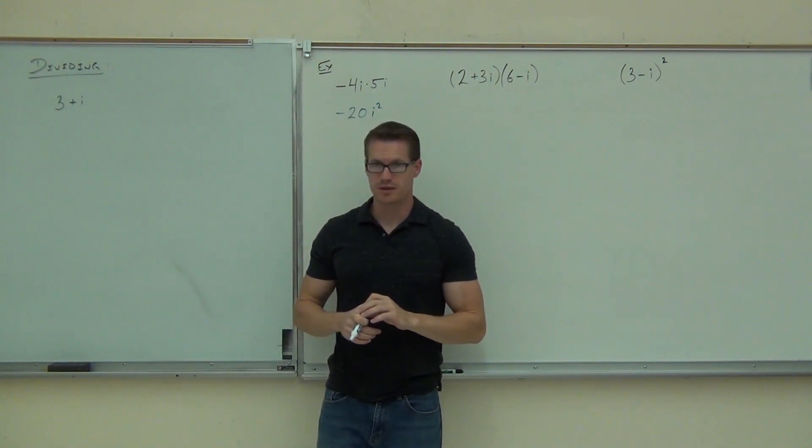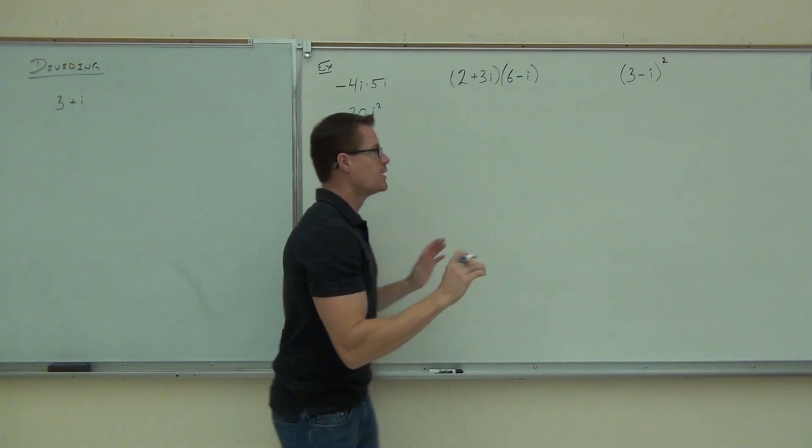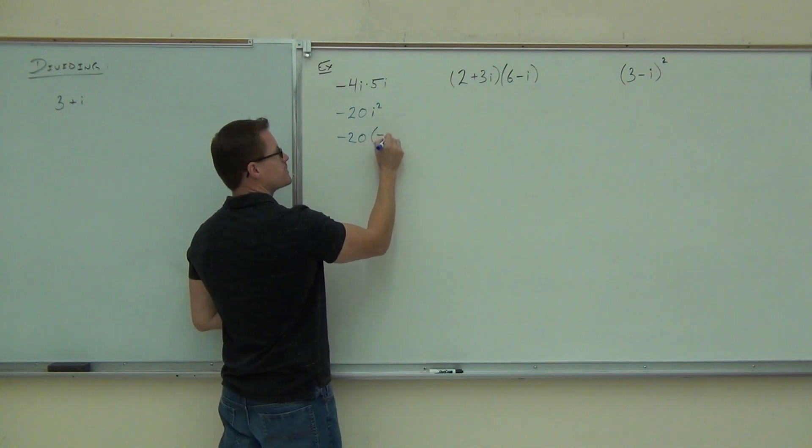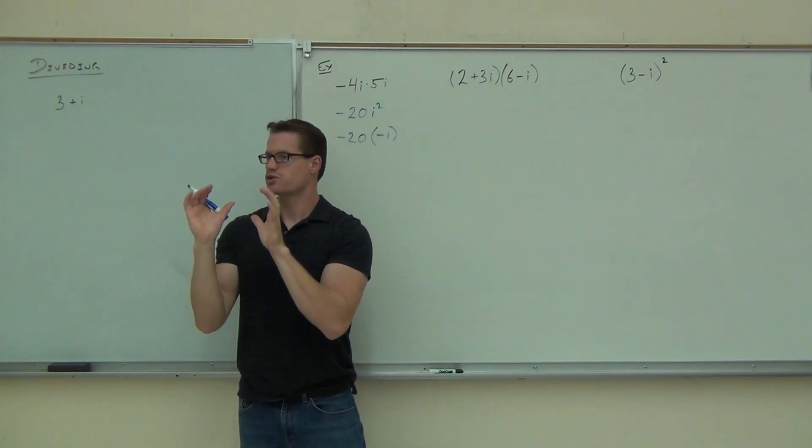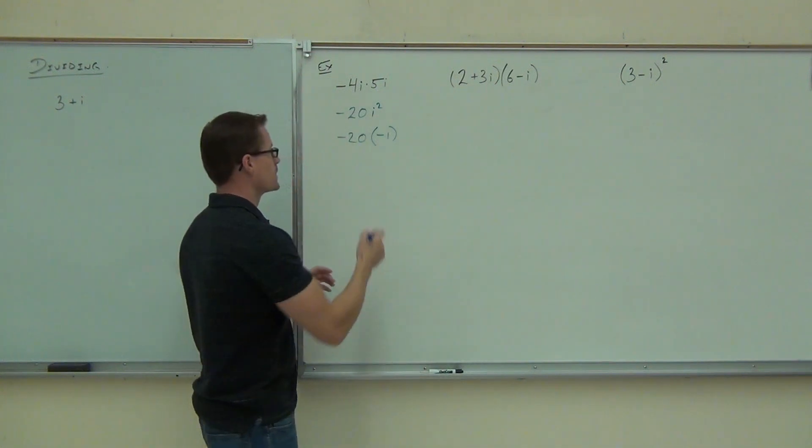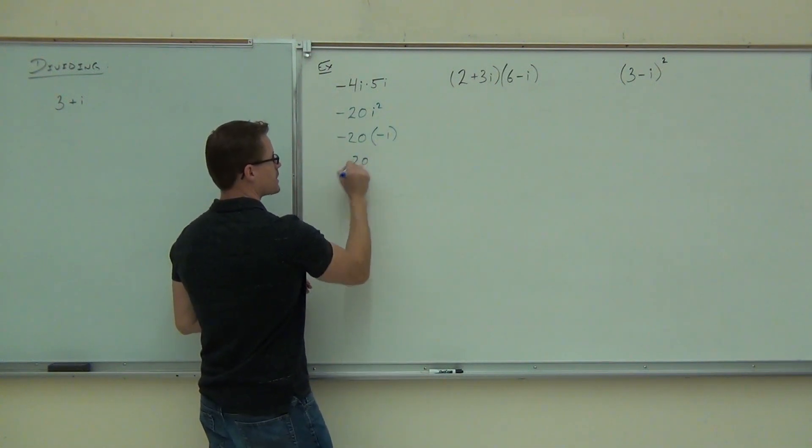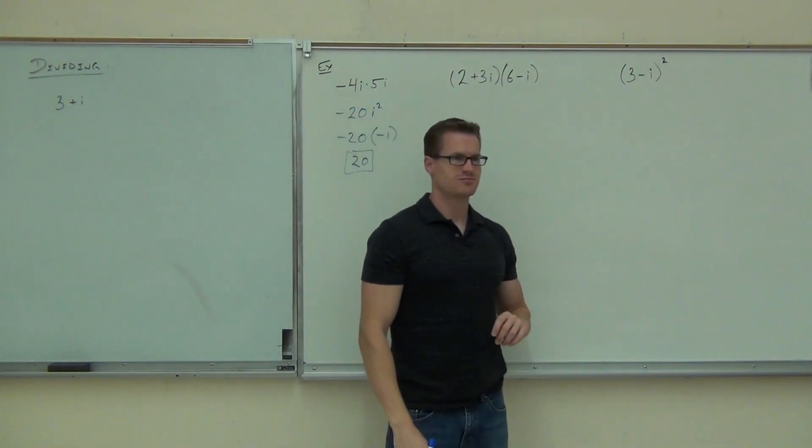I hope not. Are you ever going to leave an i squared? No. You do have negative 20, but the i squared actually means negative 1. It's the square root of negative 1 times itself. Any square of a square root, gone. We get negative 1 out of that. That gives us positive 20. Yes, no? Yes. Alright.